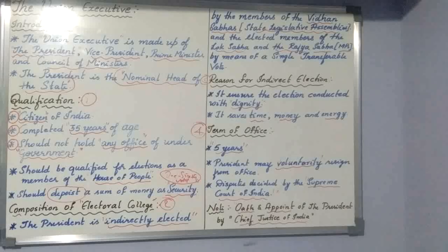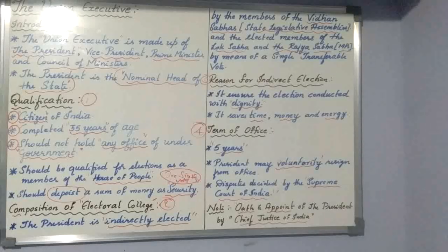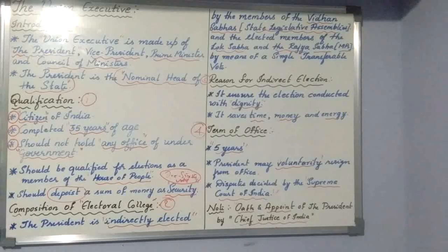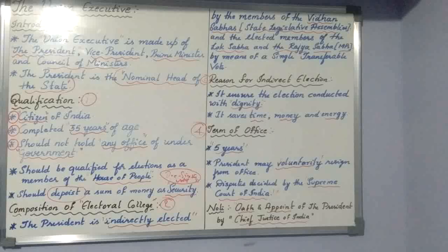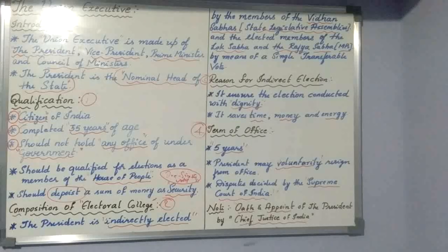So that covers qualification, electoral college, reasons for indirect election, and term of office. In the next class, we will move on to the impeachment procedure and the powers and functions of the president. Till then, please revise these four concepts — qualification, composition, reasons for indirect election, and term — by referring to the textbook once. Thank you.